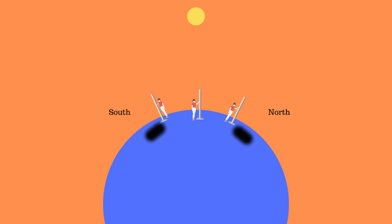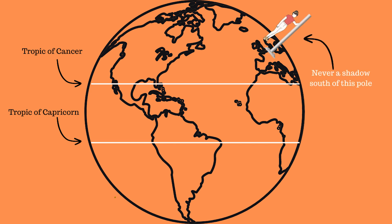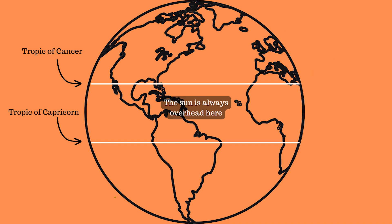Two lines of latitude are important: the Tropic of Cancer in the north and the Tropic of Capricorn in the south. North of the Tropic of Cancer, a pole held upright would never have a shadow to its south. The sun is always directly overhead somewhere between these two lines — that's exactly what the tropics are. When it's summer in the northern hemisphere, the overhead point is north of the equator; in winter it moves south, but it always stays between the two tropics.